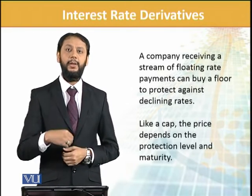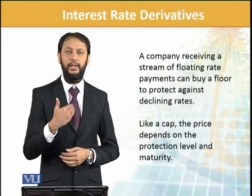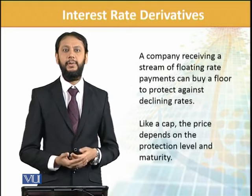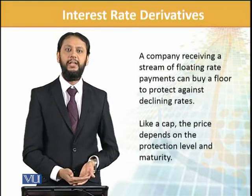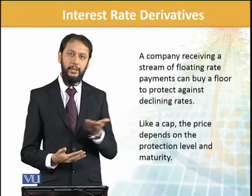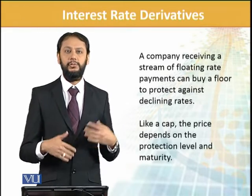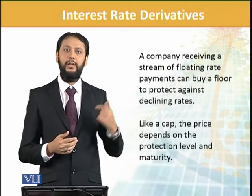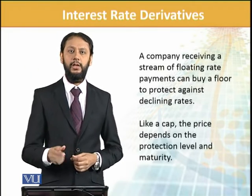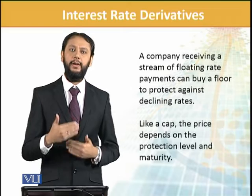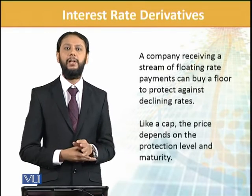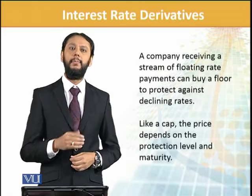If you are receiving a floating rate stream — meaning you have invested somewhere and you are getting a floating rate from there — your fear is that the interest rate might fall too much. In that case, what you do is you buy a floor, so that you get at least a minimum rate. Sometimes people buy both together — that is another concept called a collar, which you can refer to. But here we are just understanding the impact and how the interest rate link works. So you buy a floor, and you will know the rock-bottom level — that at least this much I will receive.